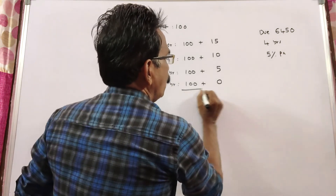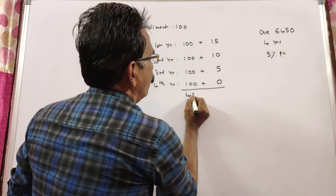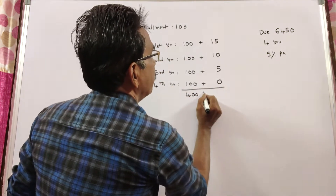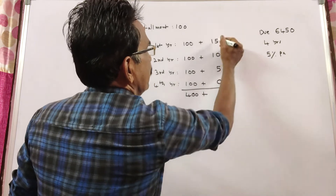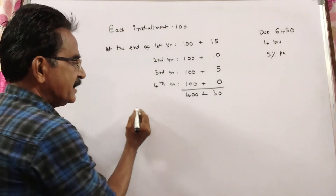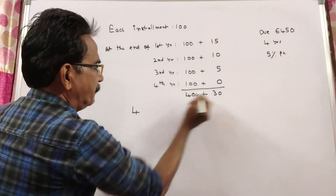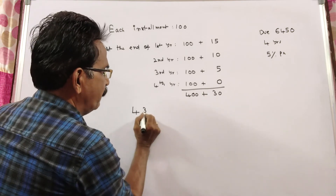So now the total amount: Rs. 400 principal plus Rs. 15 plus Rs. 10 plus Rs. 5 equals Rs. 30 interest, giving a total of Rs. 430.